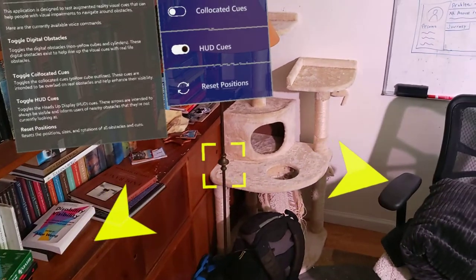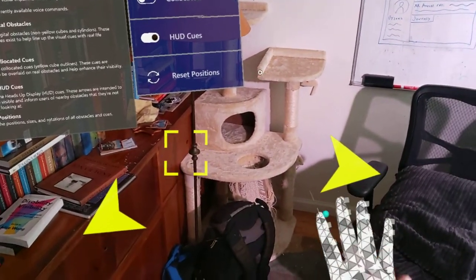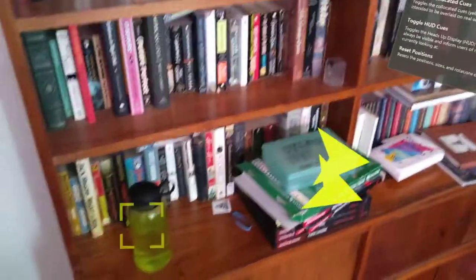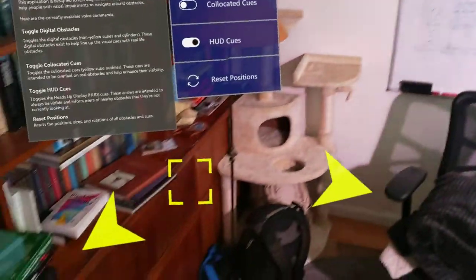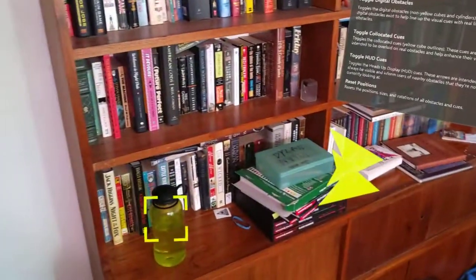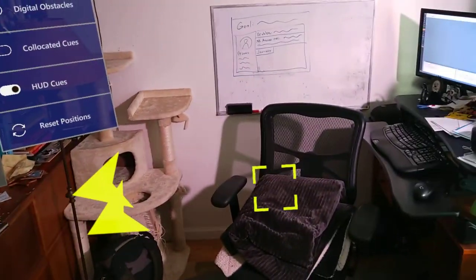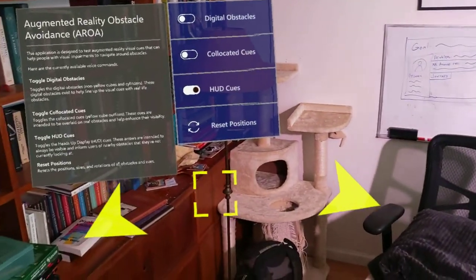We can potentially play with how close these appear to the user. Right now they're set at one meter. We can play with the colors, and in future products we'll be looking at having these change size based on the distance to the obstacle and potentially being able to add and remove HUD cues for each obstacle separately.